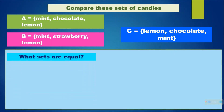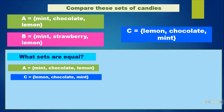So what sets are equal? A and C. They have equal elements. In set A we have mint, and set C also has mint. Set A has chocolate, and set C has chocolate too. Set A has lemon, and set C also has lemon. So they are equal because their elements are the same. So A is equal to C.